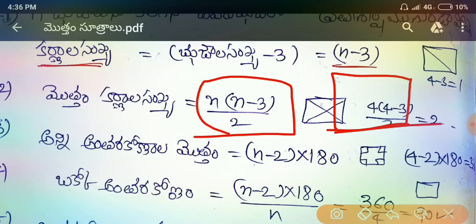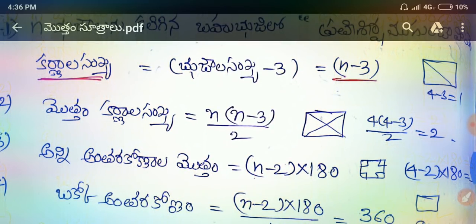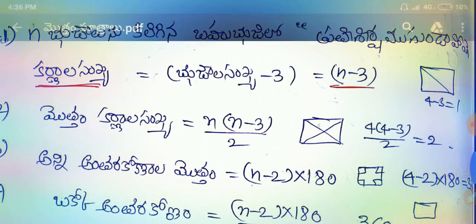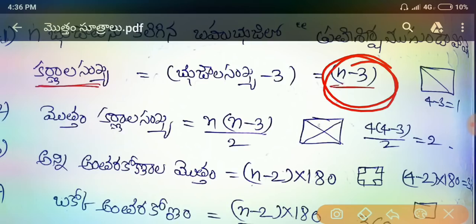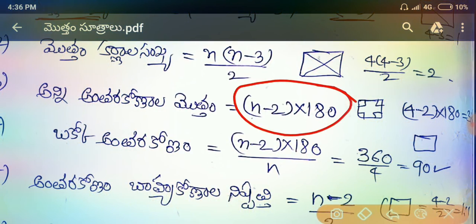n into n minus 3 by 2. 4 into 4 minus 3 by 2 is 2. So the second one is the second one. This one is e. n minus 3 by 2 — 1, 2, 1, 1, 2, 1, 2, 1 — 3.5. So if you have the antaracons, it is 3.5.